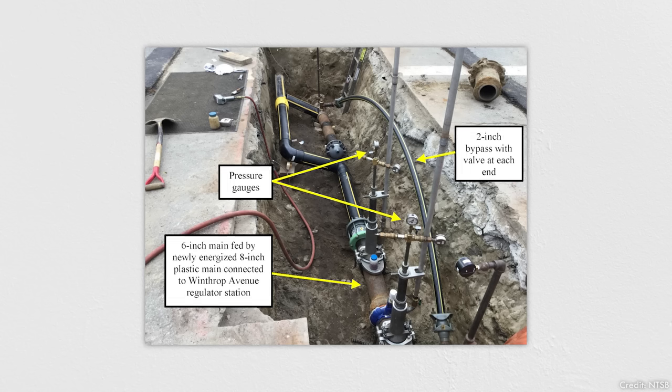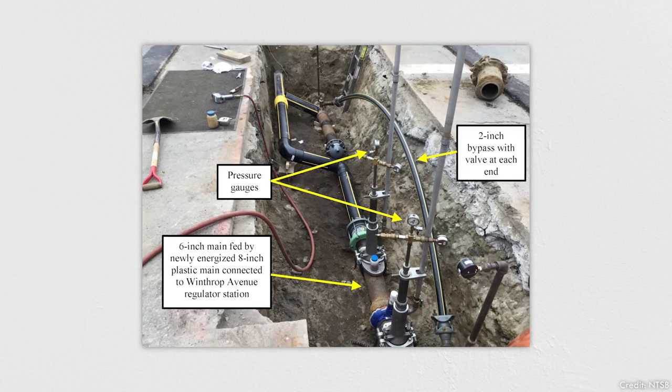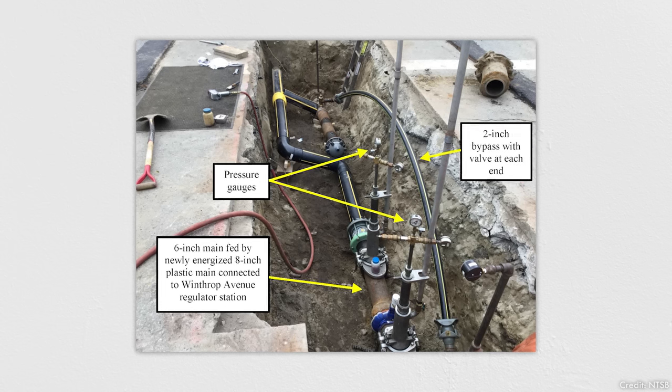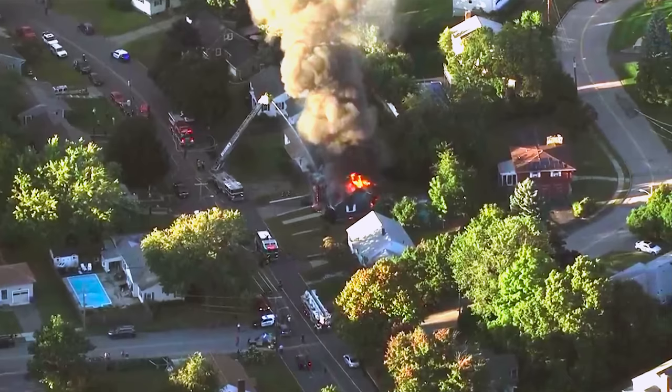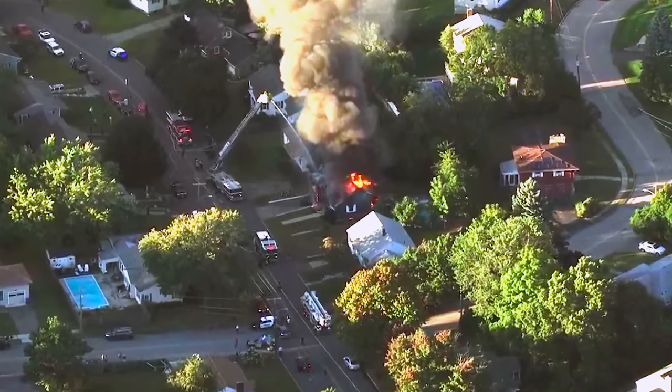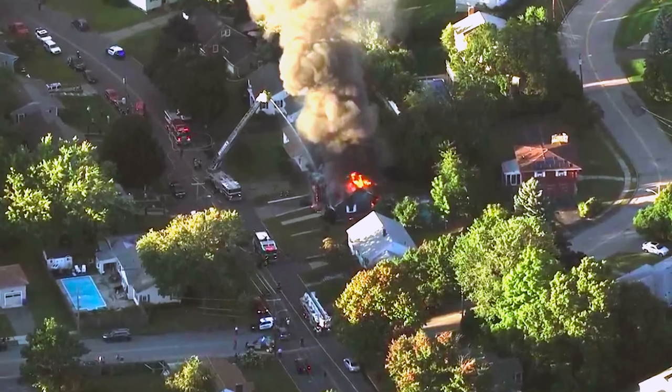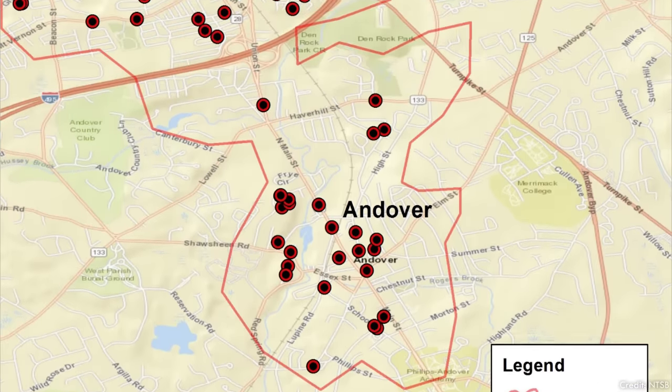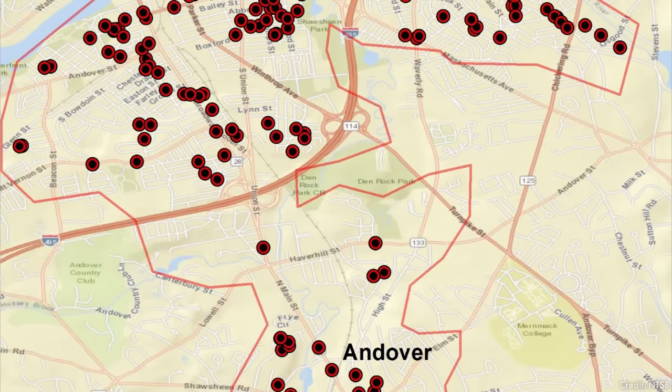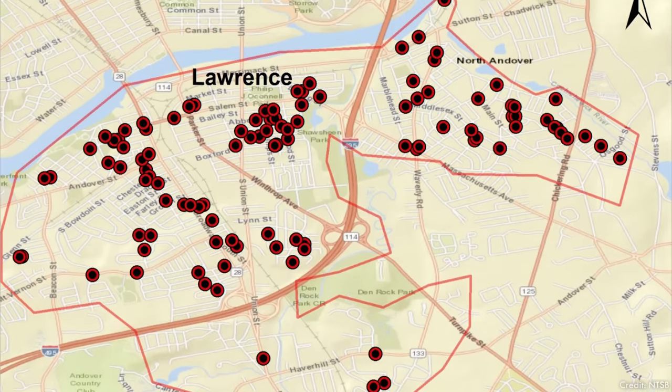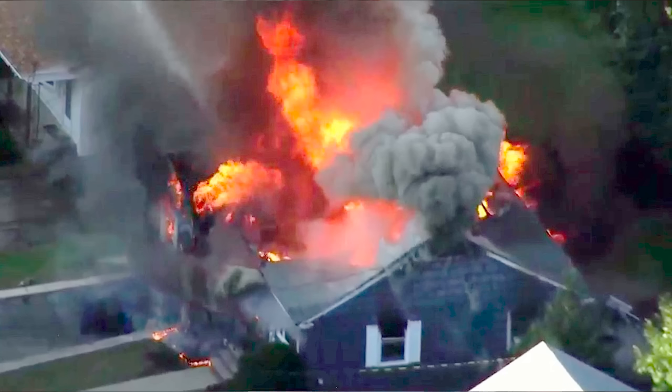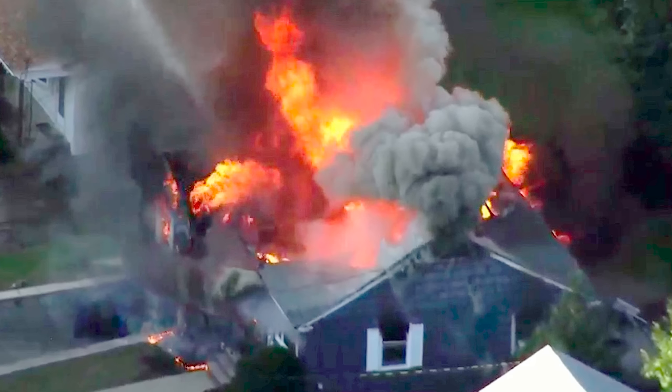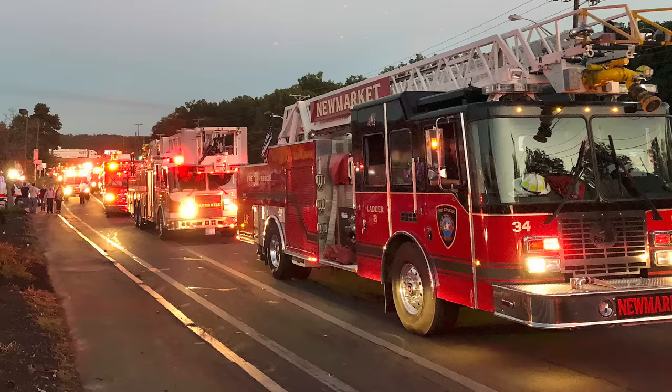By the time things went sideways, the crew at the tie-in had taken most of their equipment out of the excavation. But as one worker was removing the last valve, it blew off into his hand as gas erupted from the hole. The crew heard firefighters racing throughout the neighborhood and saw smoke from fires across the horizon. The overpressure event had started a chain of explosions, mostly from home appliances that weren't designed for such enormous pressures.